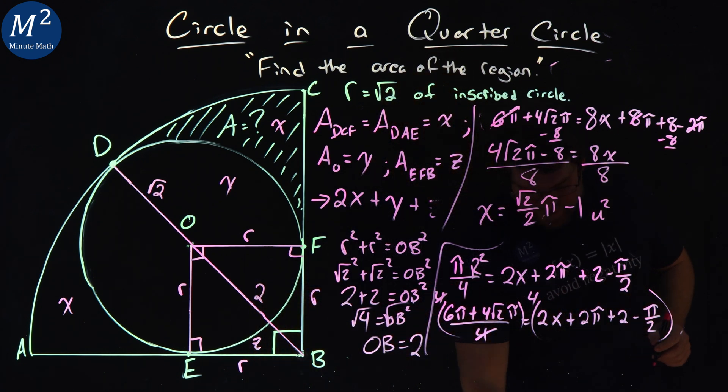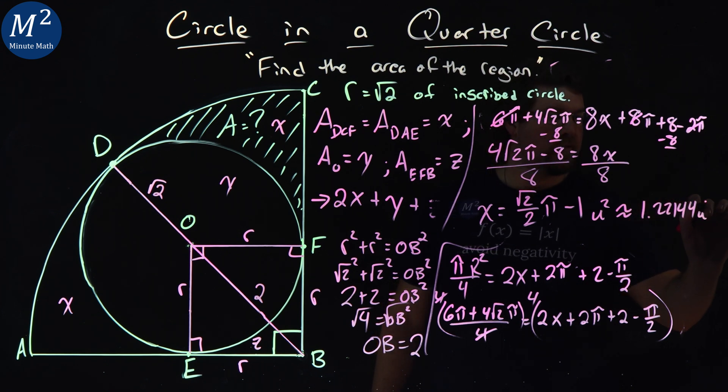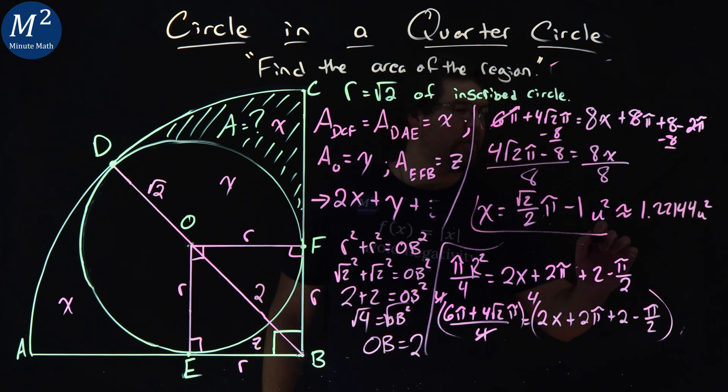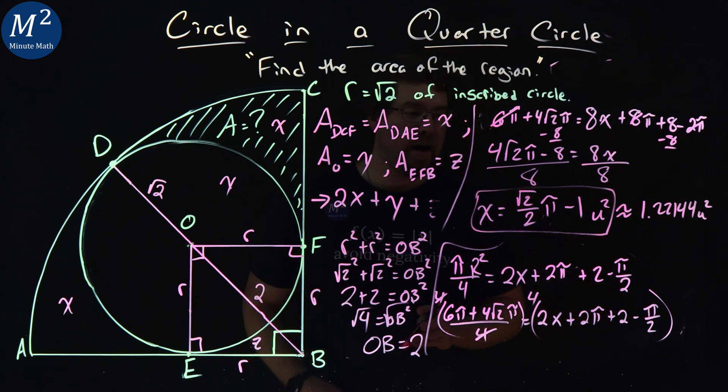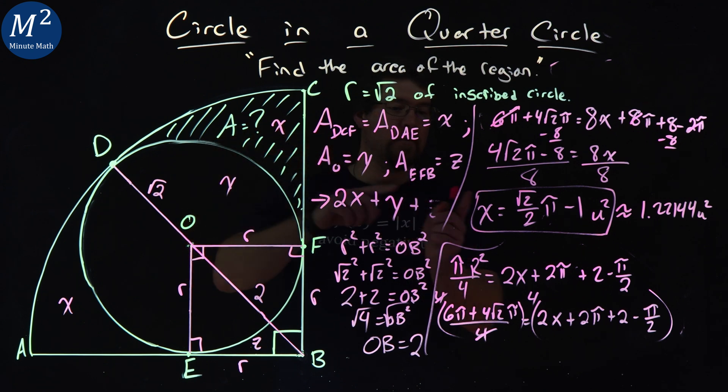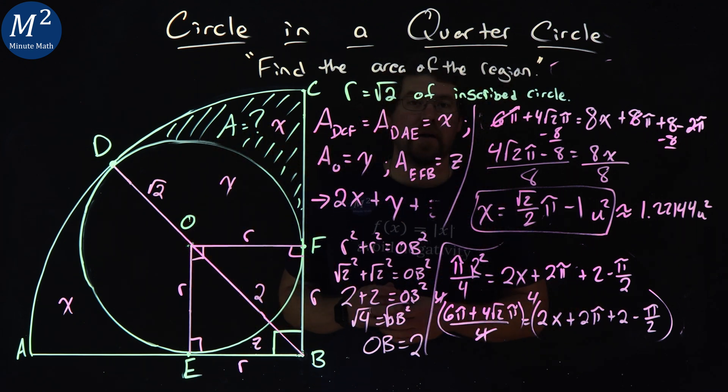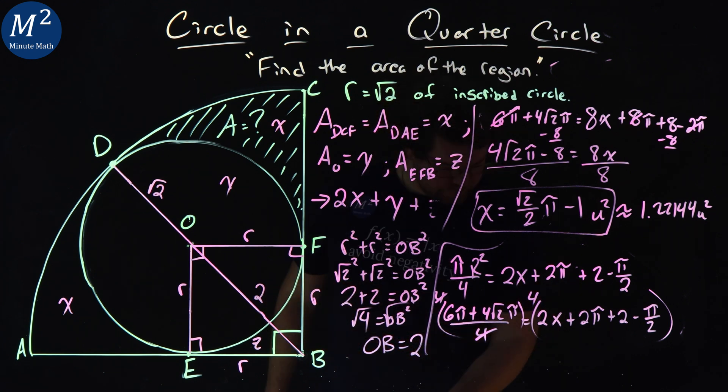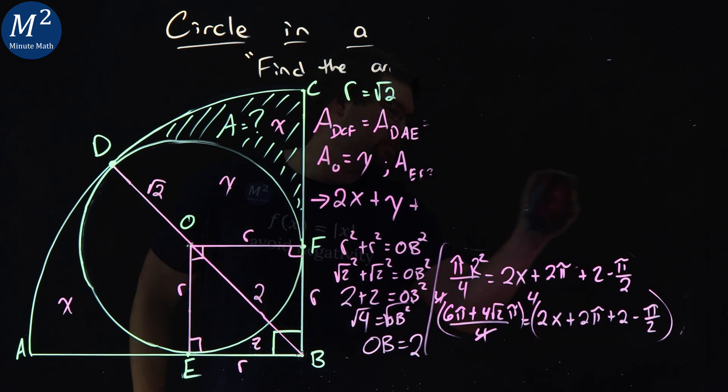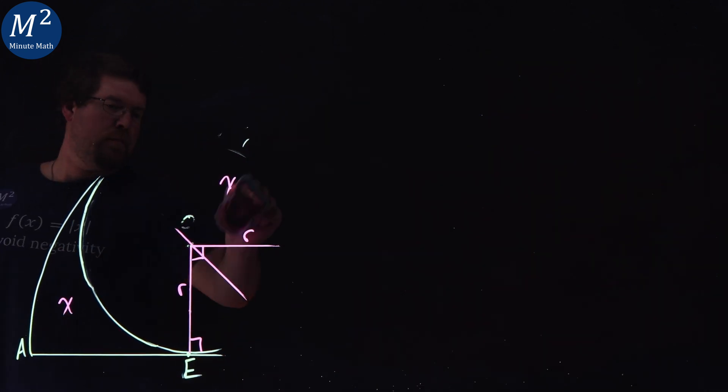And if we write that as a decimal, that's approximately 1.22144 units squared. But I always prefer the pi version. So again, our area of our shaded region, just one of the X's, which we got here, is square root of 2 over 2 pi minus 1 units squared. Did you get that answer? If you did, way to go. If you didn't, but you learned something, hey, that's what the whole point is here. So, as always here, thanks for watching.